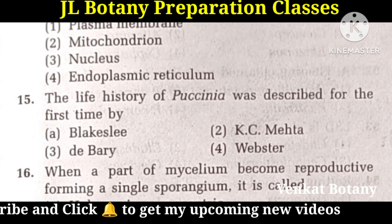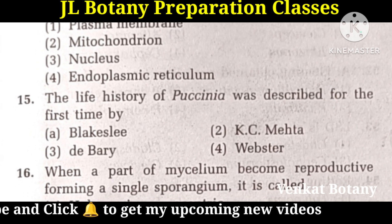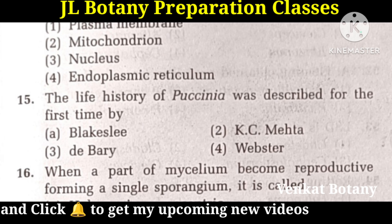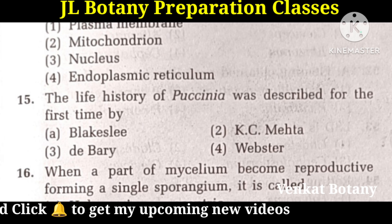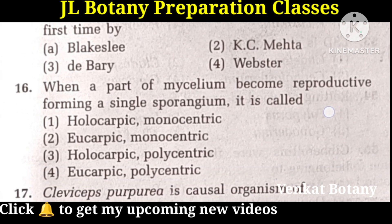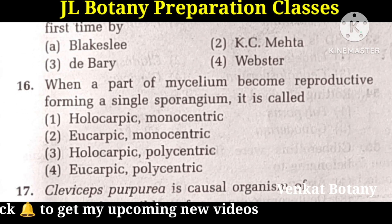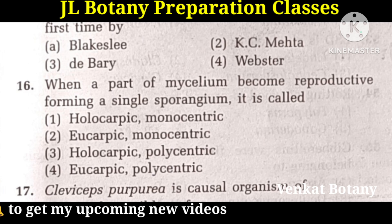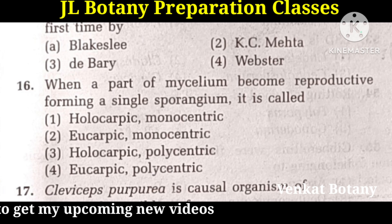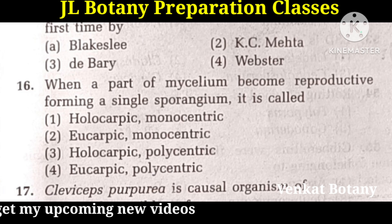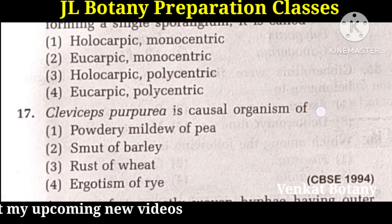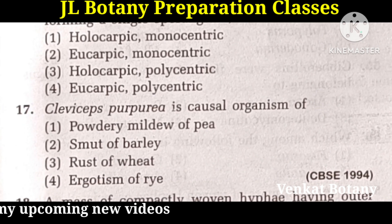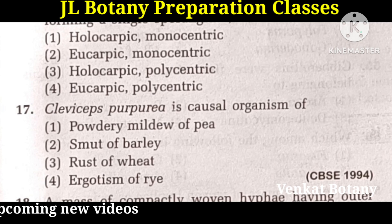The life history of Paxinia was described for the first time by Debori. When a part of mycelium becomes reproductive forming a single sporangium, it is called Eucarpic monocentric — the second option. Claviceps purpurea is the casual organism of Ergotism of rye — the fourth option.